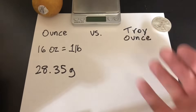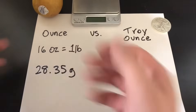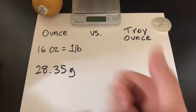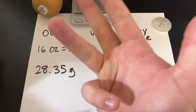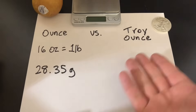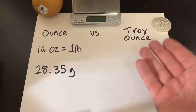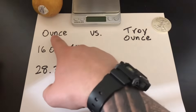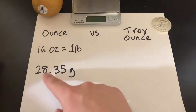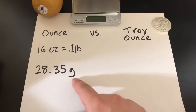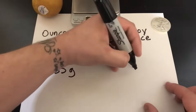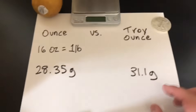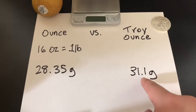Now what about troy ounces? Regular ounces weigh regular things. Troy ounces weigh precious metals like gold, silver, platinum, and palladium — those all need to be weighed in troy ounces. A troy ounce is actually a little bit heavier than a regular ounce. There are 28.35 grams in a regular ounce, but troy ounces have 31.1 grams. So it's about 10% heavier for a troy ounce.